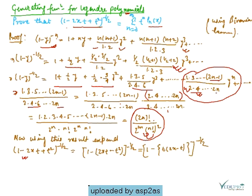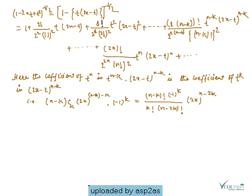Expansion of (1 - 2xt + t²)^(-1/2): first we write it in binomial expansion form as [1 - t(2x - t)]^(-1/2). By applying the binomial expansion we have the expansion of (1 - 2xt + t²)^(-1/2) as this series.